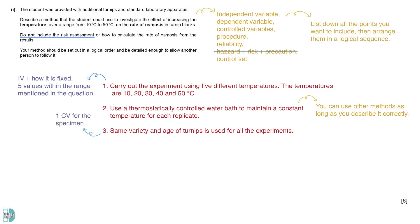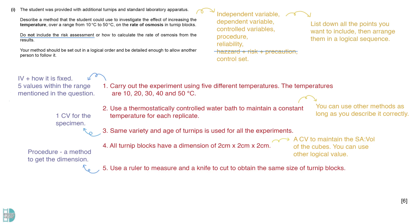Then, we need to have a control variable for the specimen. For example, the same age of turnip must be used in the whole investigation. The surface area to volume ratio can affect the rate of osmosis. We can maintain a constant value by controlling the dimensions of the cubes. You don't have to use the same dimensions as my example, but you must state a logical value. Provide a method to ensure the same dimension will give you the next mark.